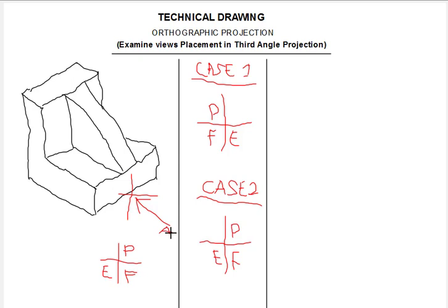If a question of this nature is asked and you are given an arrow and asked to draw the views in third angle projection, then we draw a plus sign in front of the arrow head. In first angle projection, we draw the plus sign at the tail end of the arrow. In third angle projection, we draw the plus sign in front of the arrow. This is case two.